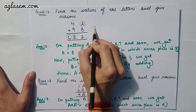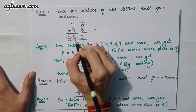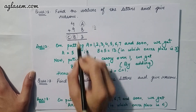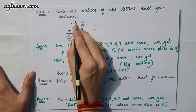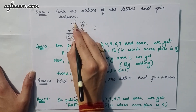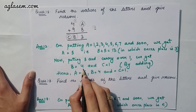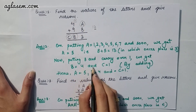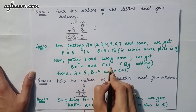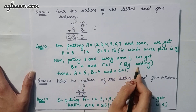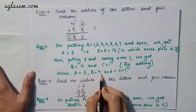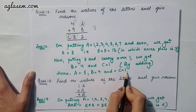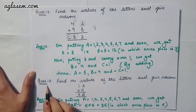Now B = 4, by adding 9 + 4 + 1 (carry) = 14, ones digit is 4 and carry 1. And C = 1. Hence A = 5, B = 4, and C = 1.